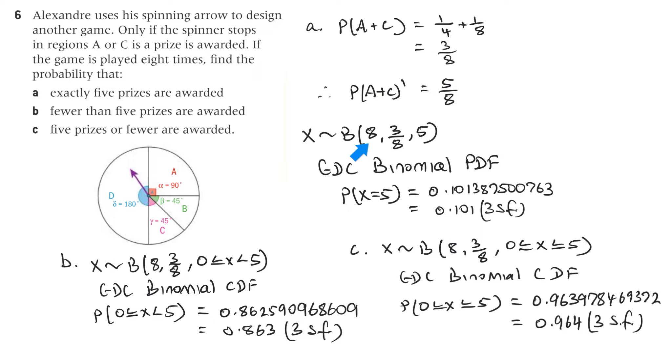So for A, X is distributed binomially. It's played eight times. The probability of it landing on A and C, so that's where you get the prize, is three on eight. And that exactly five, so we use PDF and we put a five there. So the GDC is binomial PDF. And the answer is 0.1013875000763, which is 0.101 to three significant figures.